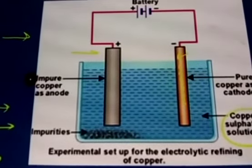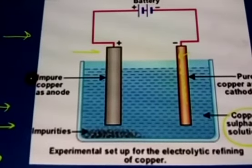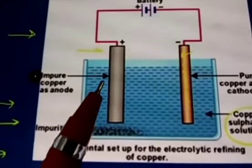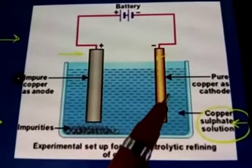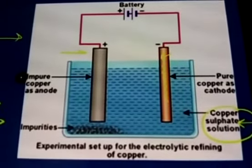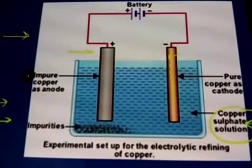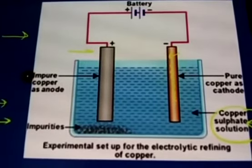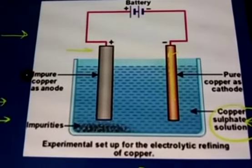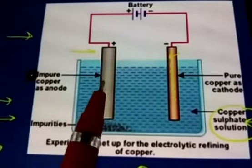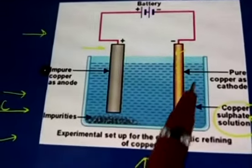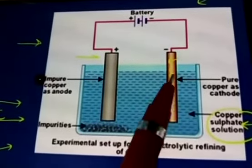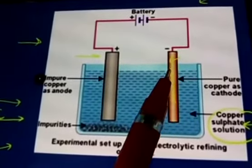Loss of copper from the solution is restored and the process continues. This means the copper gets transferred from one electrode to the other. The process of depositing a layer of any desired metal on another material by means of electricity is called electroplating. This itself is electroplating. The copper from this rod is dissolved in the water and it is going and attaching to the rod here which you can see, the shiny thing here. Pure copper goes to the cathode.